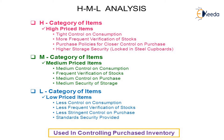HML analysis includes H category items, which are high priced items. These generally require tight control on consumption, more frequent verification of stocks, purchase policies for closer control on purchases, and higher storage security.